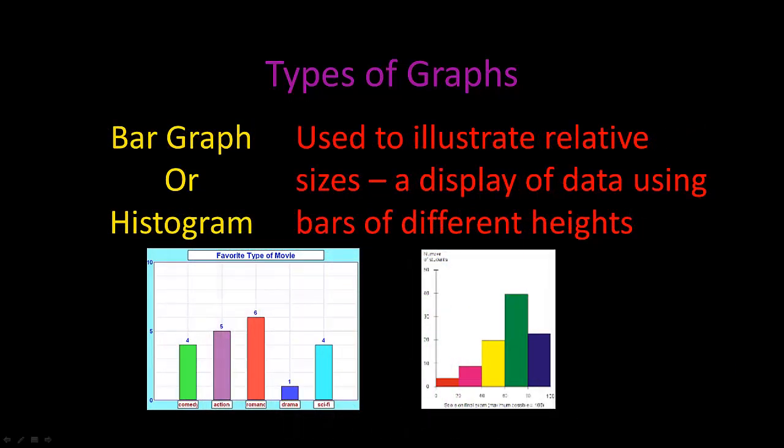The next type of graph is the bar graph or histogram. This type of graph is used to illustrate relative sizes and displays data using bars of different heights.